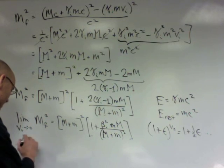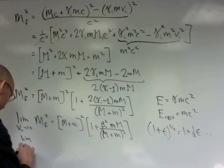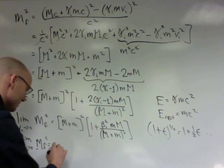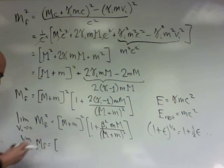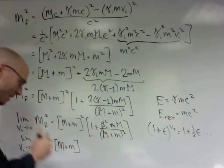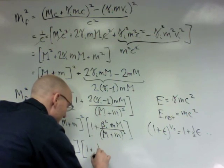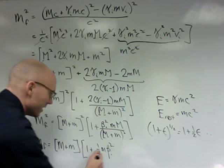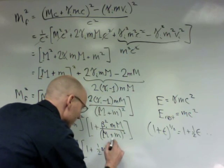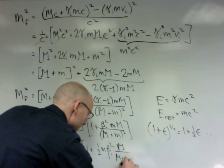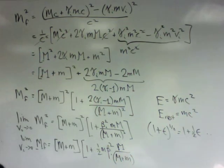So when I perform that operation, I get that the limit as the velocity goes to 0 of mf is m plus m times 1 plus 1 half m beta i squared times capital M over capital M plus little m times capital M.